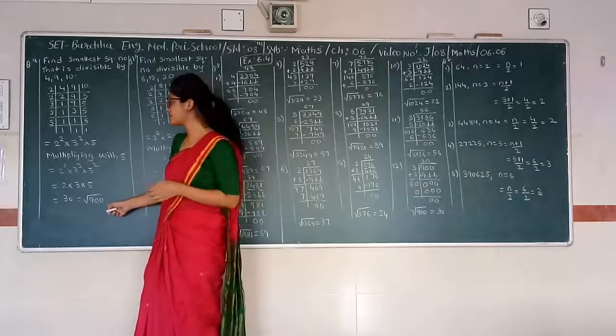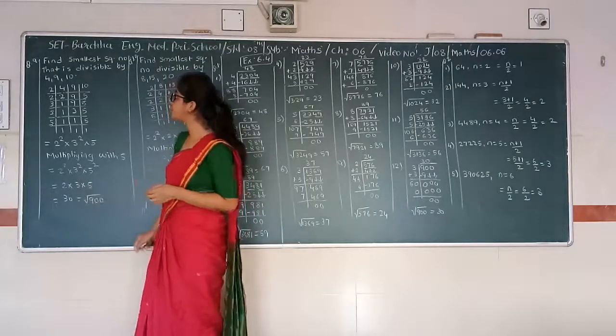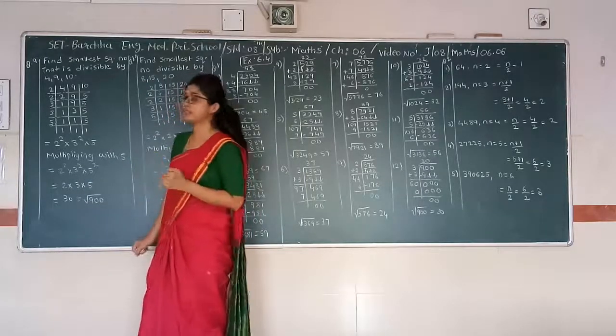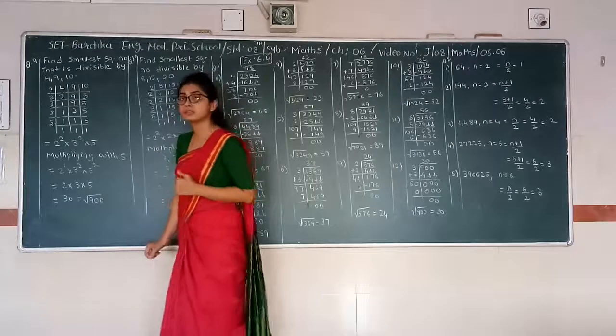Square of 30 will be 900. Therefore, the smallest square number divisible by 4, 9 and 10 will be 900.